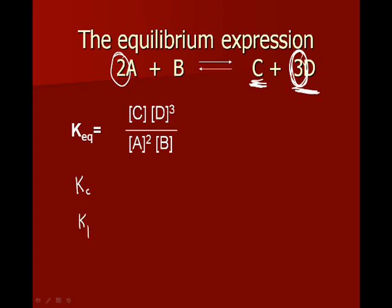Kp is the equilibrium constant in terms of pressure. Ka is the equilibrium constant for a weak acid system. Kb is the equilibrium constant for a weak base system.